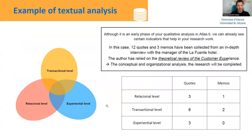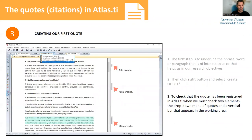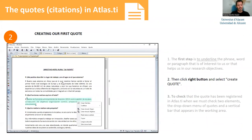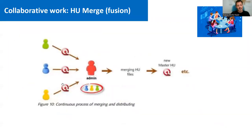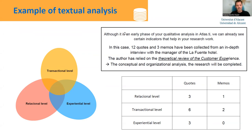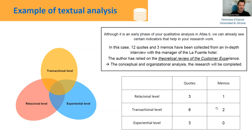Here is an example of a translation and summary of the textual analysis for the hotel manager of Hotel Rural La Fuente. This is a summary of the textual analysis taking into account the three different levels. As an example — there should be more in a real analysis — we can have a total of 12 quotes divided into relational (three), transactional, and experiential, plus memos such as one methodological, two observational, and zero theoretical. In the example you have to do, there should be more quotes and more memos, but this summary table is very important.